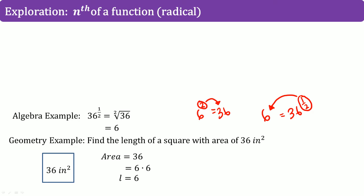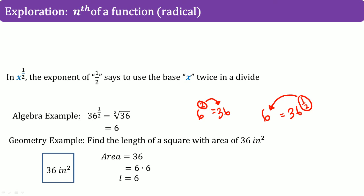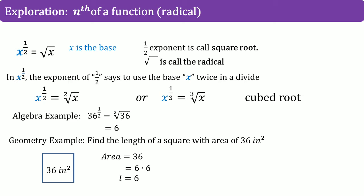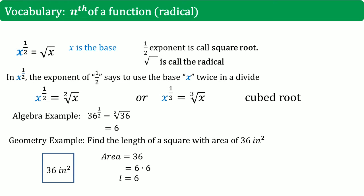That one half in the exponent tells us to use that base x twice, but now in division. That is why you see the divide symbol. So x to the one half power is the same thing as the square root of x. Similarly, x to the one third power is the cube root of x. So x is still the base, the one half exponent is called the square root, and this symbol is referred to as the radical. The nth function is just having the exponent as a fraction, which can be written using the radical symbol.